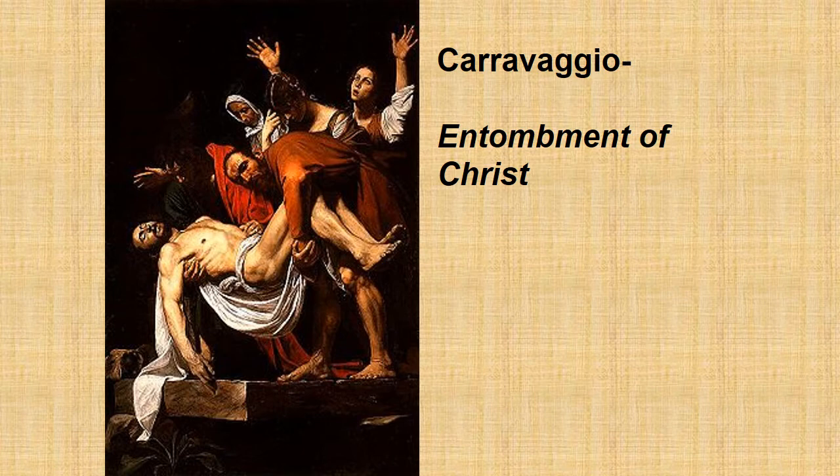The Entombment of Christ — again, the religious subject matter, the very strong emotional depiction of it, the use of light and dark. Notice the hands and the expressiveness of the hands. Caravaggio often has very meaningful and expressive hands in his painting that convey a sense of emotion and drama. Caravaggio did a fine job in this painting with human proportion, realism, and the light on the body of Christ — just the drama, emotion, and pain throughout.